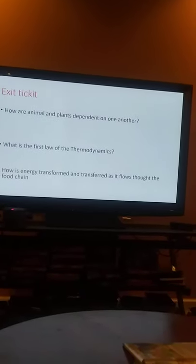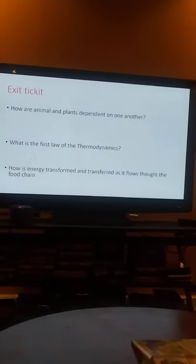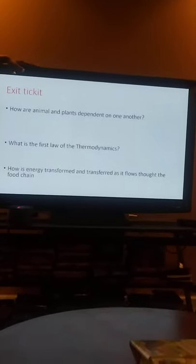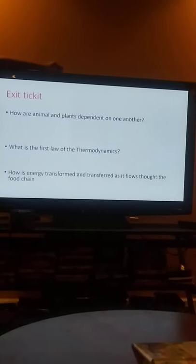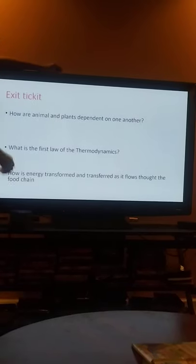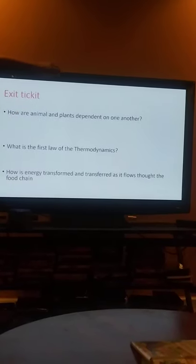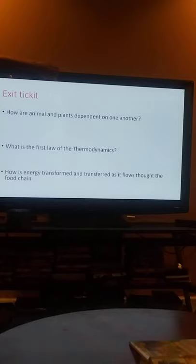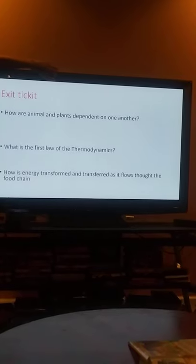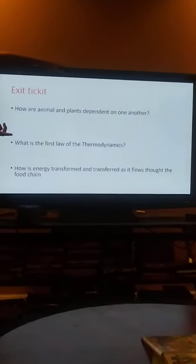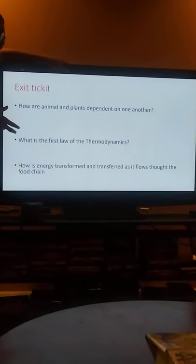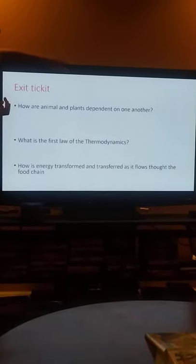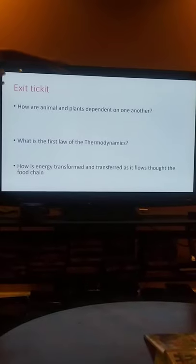We are now at the end of the section. We are going to work on an exit ticket to lead you guys out. How are animals and plants dependent on one another? They are dependent on one another because plants grow and animals like insects and other animals come and get their nutrients from the plants.